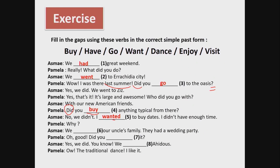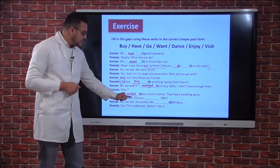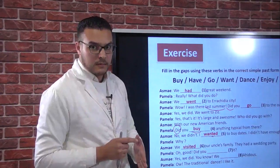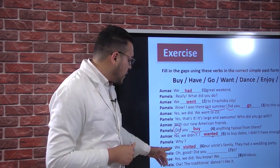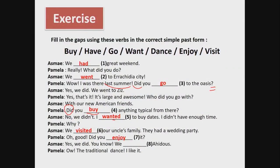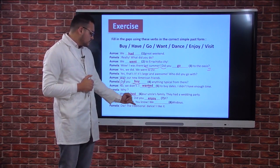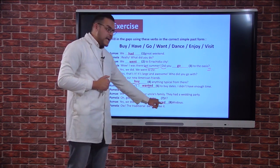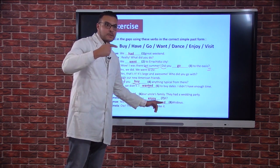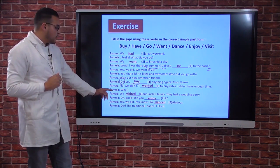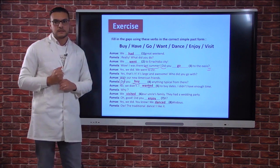Pamela asked: Why? Asma said: We visited our uncle's family — they had a wedding party. Pamela: Oh good, did you enjoy it? Another question form: did you enjoy? Asma: Yes, we did. You know, we danced — pay attention to the pronunciation: 'danced'. Pamela: The traditional dance — I love it!